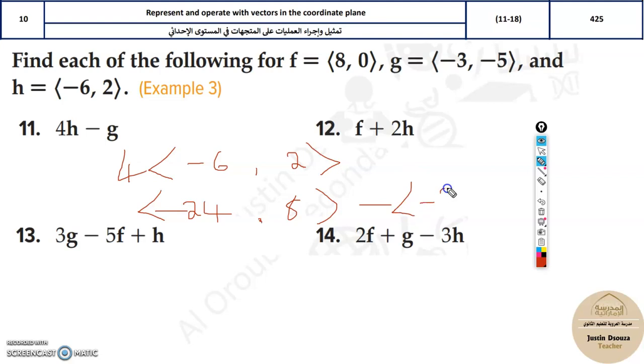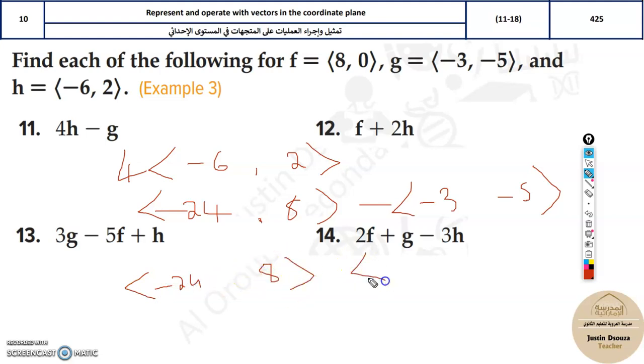You need to subtract this from negative three, negative five. So all you need to do is over here minus, and minus. Multiply this minus sign inside, so it'll be negative 24, 8. It'll be add, why? Because you're multiplying this inside. It'll be 3 and 5. So it'll be 24 plus 3, that would mean negative 21, and 8 plus 5 is 13.